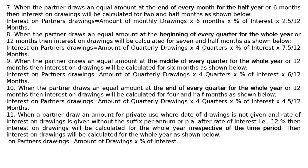The eleventh rule: when a partner draws an equal amount for private use, where the date of drawings is not given and the rate of interest on drawings is given without the suffix 'per annum' or 'p.a.' after the rate — for example, 12% — then interest on drawings will be calculated for the whole year, irrespective of time period. Interest on partner's drawings equals amount of drawings multiplied by percentage of interest.